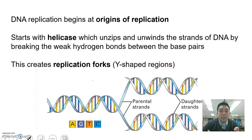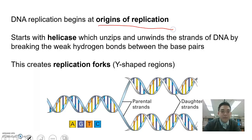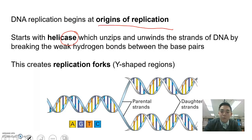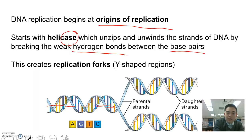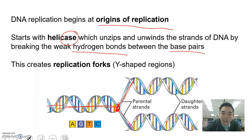DNA replication first begins at specific sites along the DNA, or in this case, a specific sequence. We call those origins of replication. At that specific sequence, it starts with helicase, which is an enzyme — we know it's an enzyme because it ends in A-S-E. Helicase comes in and starts to unzip and unwind the two strands of DNA by breaking the weak hydrogen bonds between the base pairs. Eventually, this creates a replication fork, or a Y-shaped region. We have our parent DNA here, and helicase can be found right here at this red dot, creating this sideways Y.